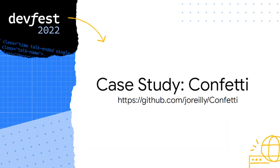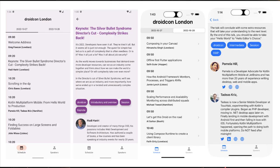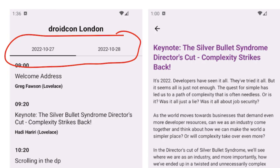I looked around for open-source apps and found Confetti, an event app created by John O. It's on GitHub and you can check out the code. The app has a number of interesting features, so we're going to walk through those right now. There's a screenshot for Android on the left and for iOS on the right, but since this is an Android conference we're going to focus on the Android app.